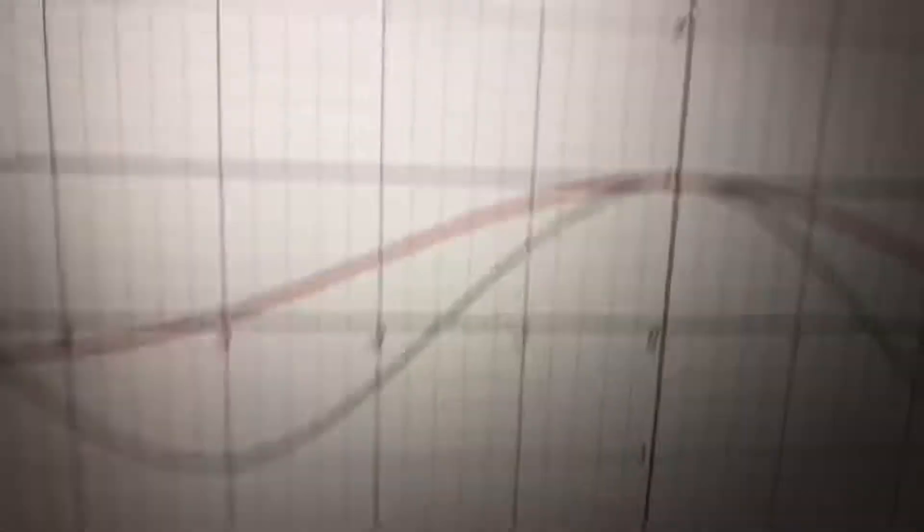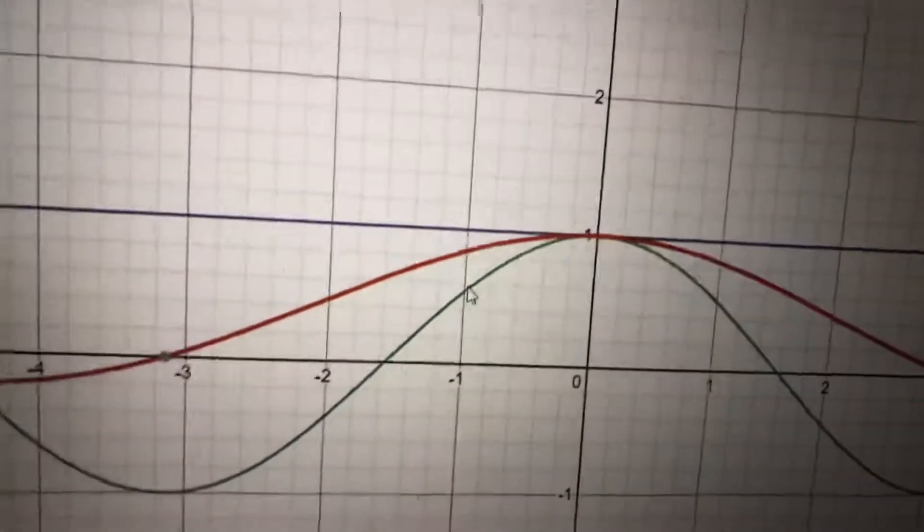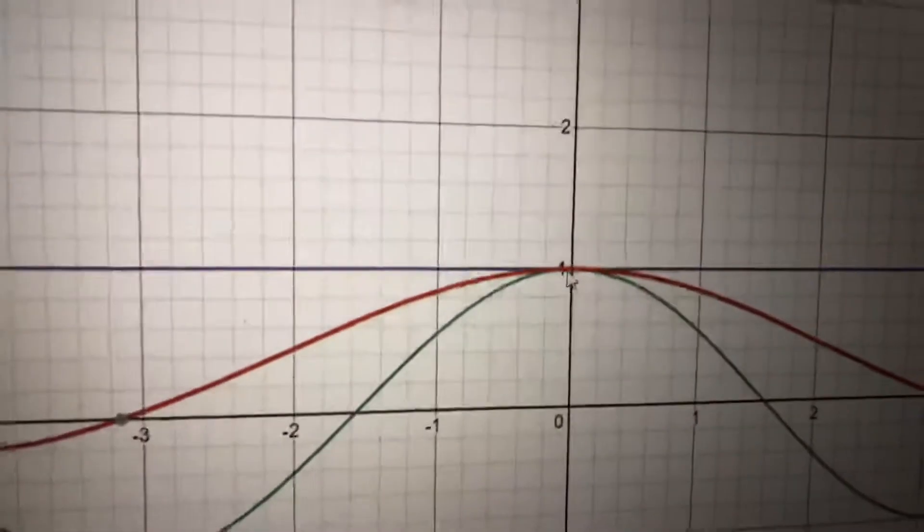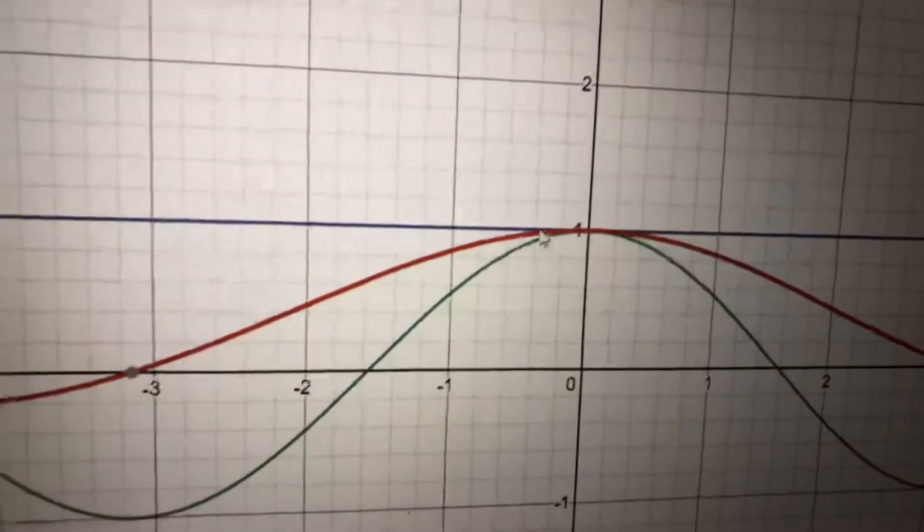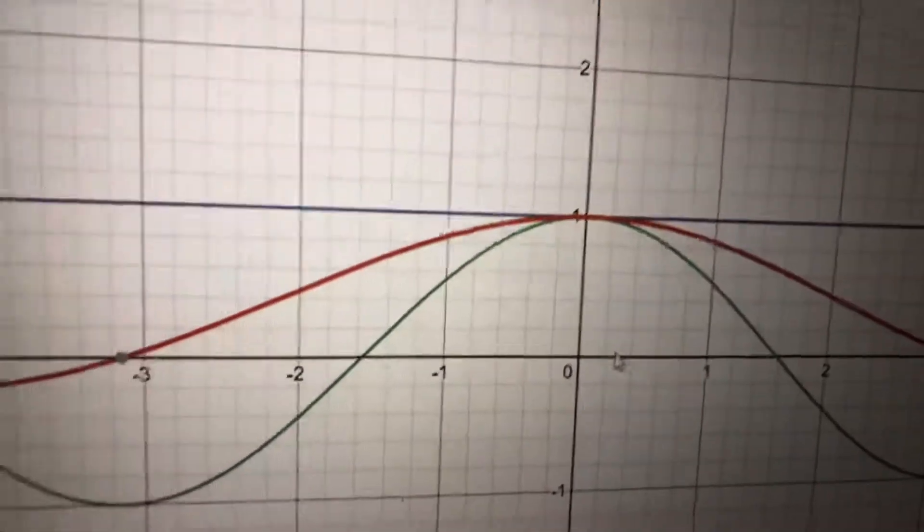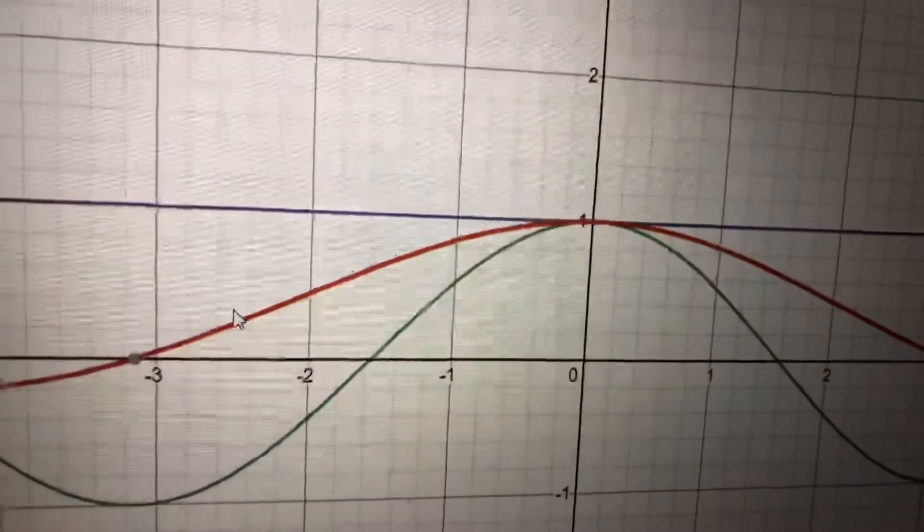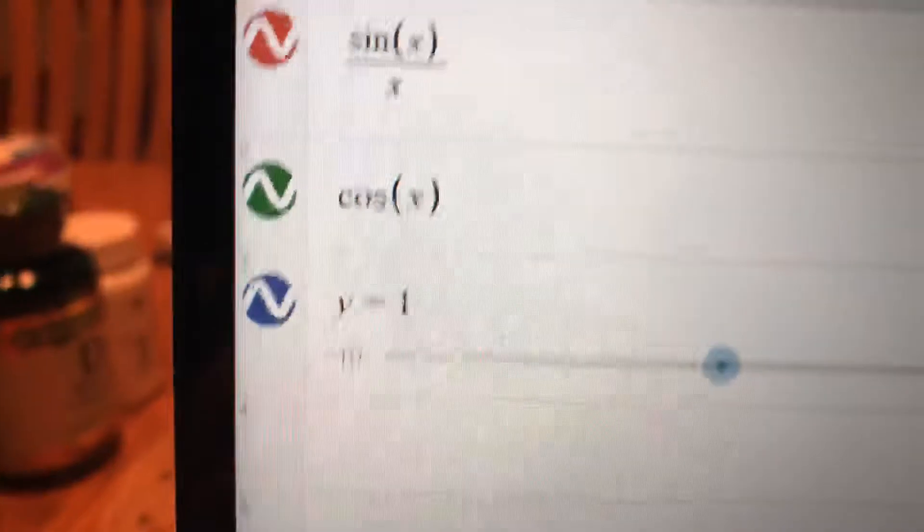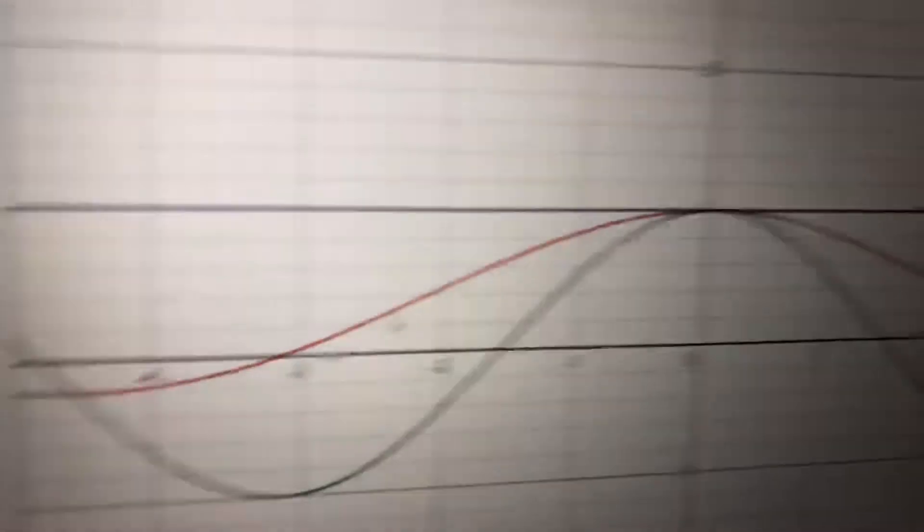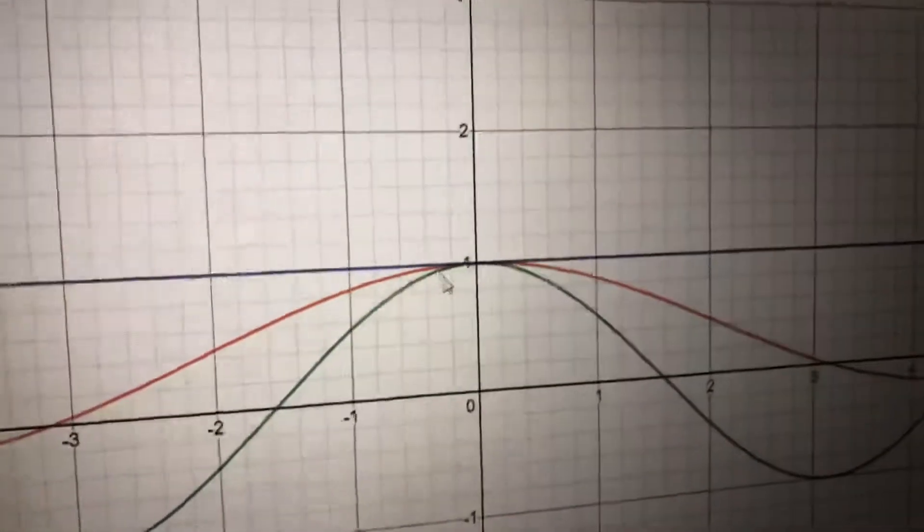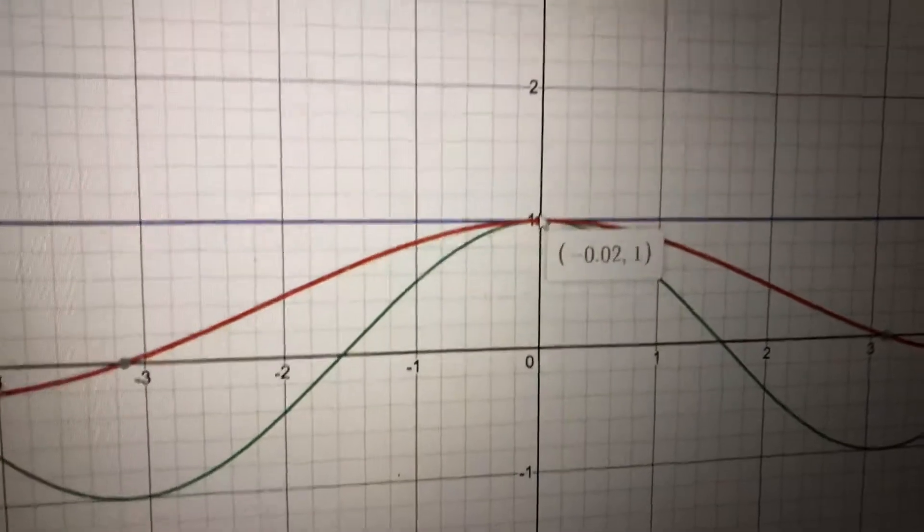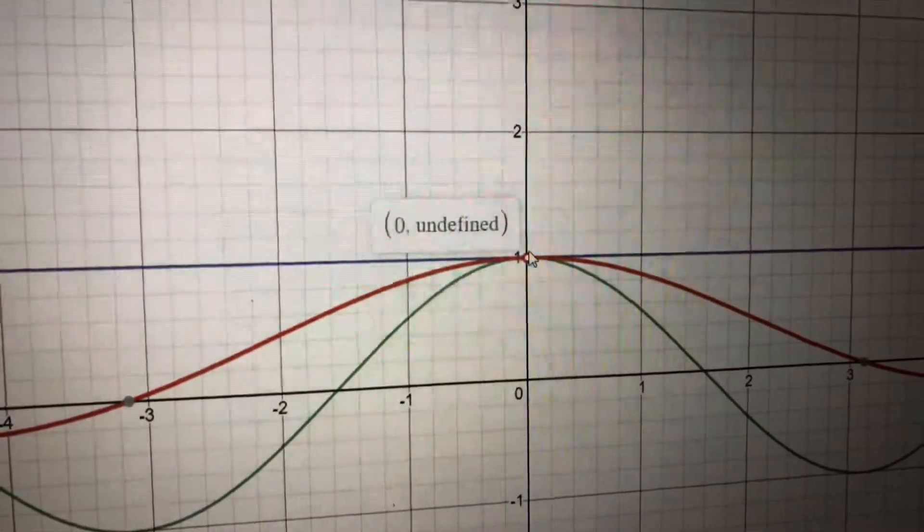And I'm just going to talk about the squeeze theorem, which basically just says that this green curve and this magenta line share said common limit, said common point of zero comma one. And even though this red function is actually going to be sine of x divided by x, so we can't divide by x equals zero, so it's undefined. Let me see if I can get this to you. Let's see if Desmos graphing calculator is working. Zero undefined.